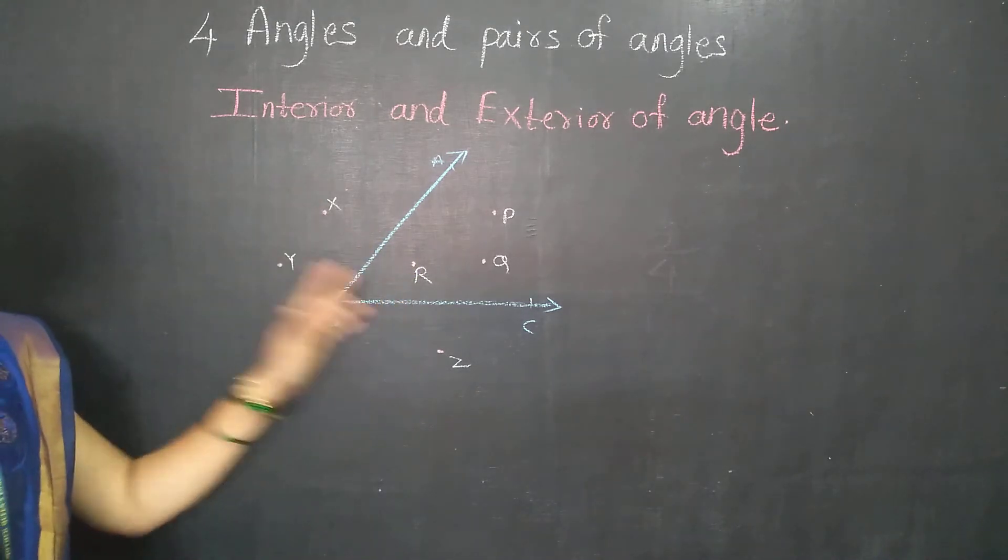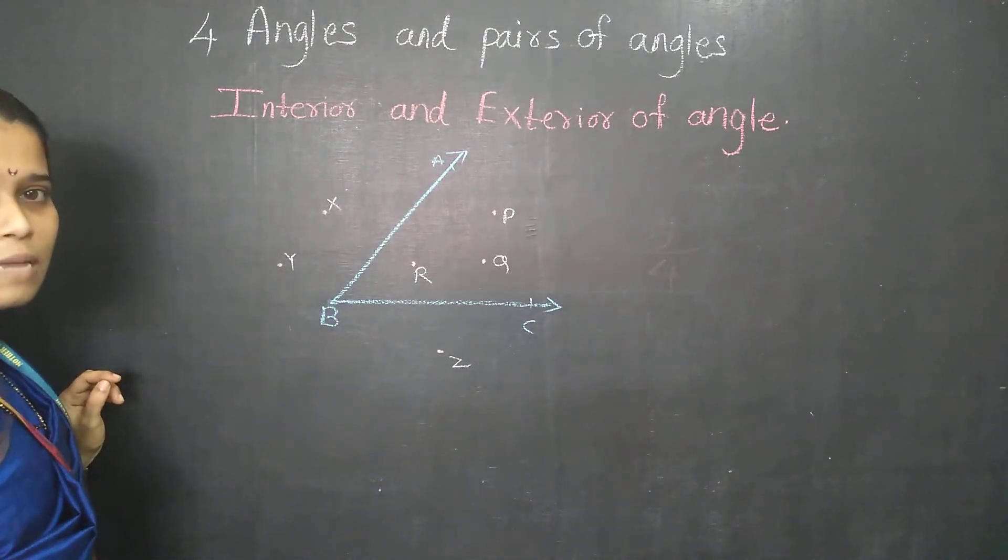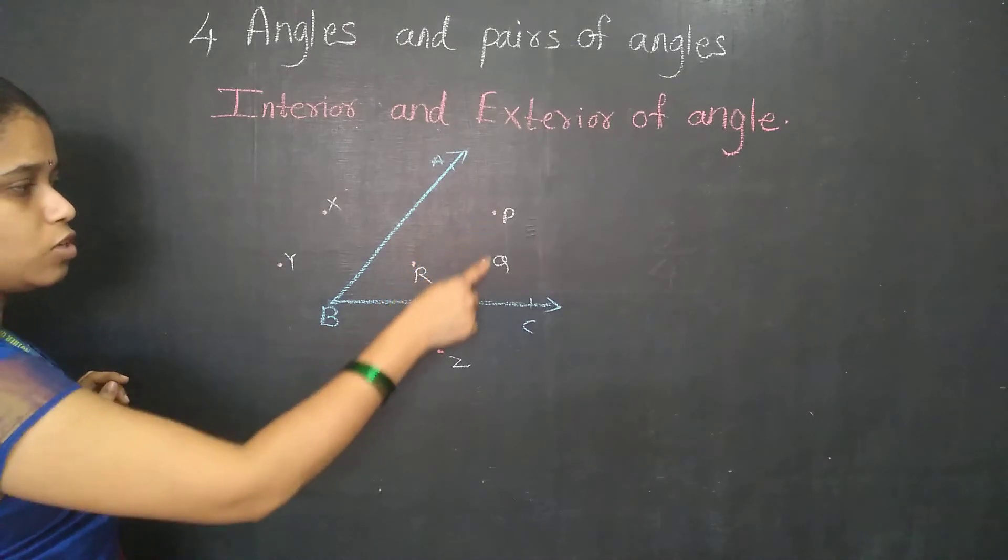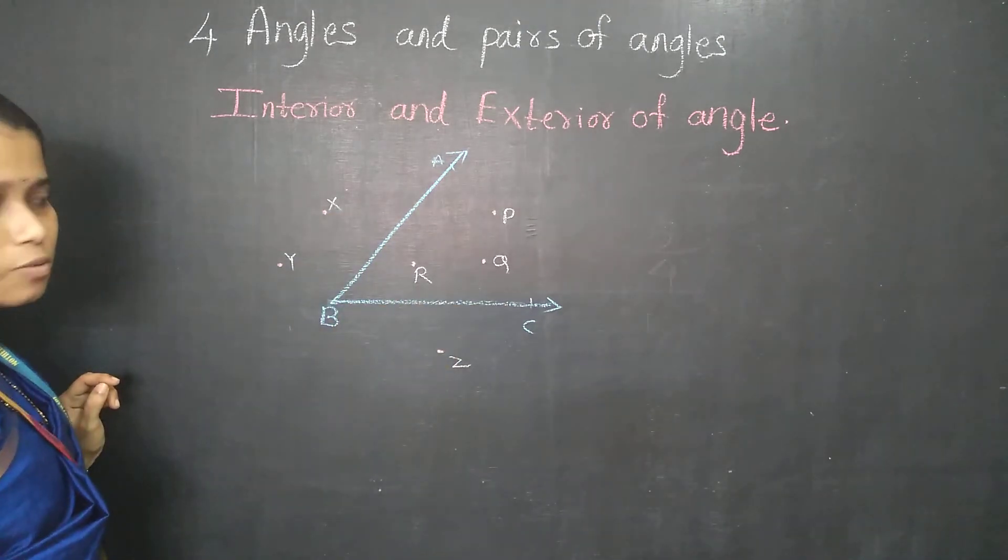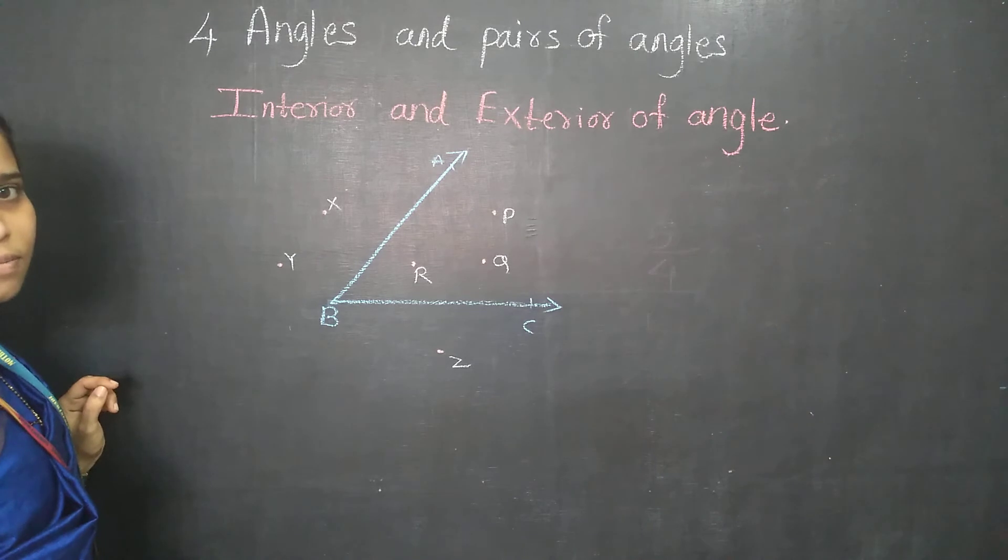Now you can see here in this diagram, this is the angle ABC. In this angle ABC, these three points are inside the angle, and these three points are outside the angles.